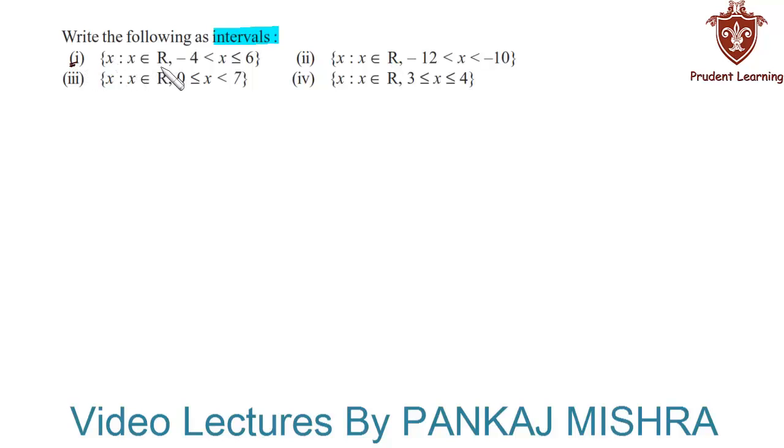that X belongs to real numbers, X is greater than -4 and less than or equal to 6. Here the given set is open on the left and closed on the right since 6 is included. Hence we can write it as (-4, 6]. We know that square bracket is the symbol for closed and simple bracket is the symbol for open.